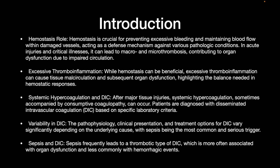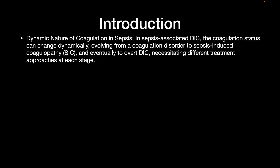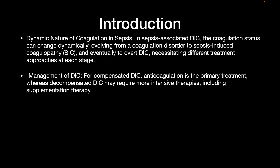Sepsis frequently leads to the thrombotic type of DIC, which is more often associated with organ dysfunction and less commonly with hemorrhagic events. In sepsis-associated DIC, the coagulation status can change dynamically, evolving from a coagulation disorder to sepsis-induced coagulopathy and eventually to overt DIC, necessitating different treatment approaches at each stage.